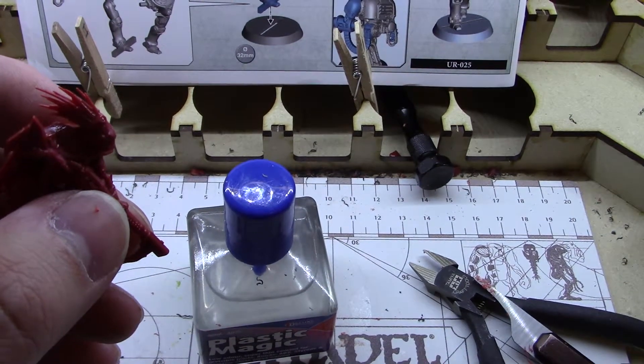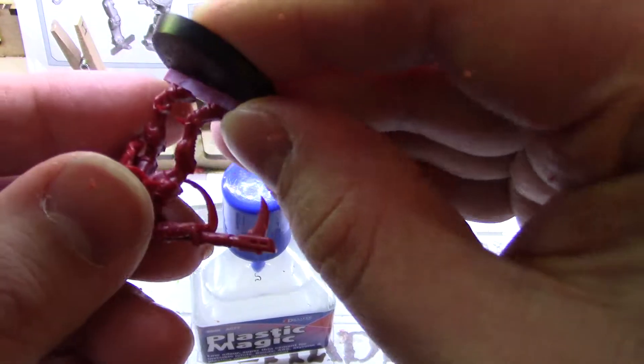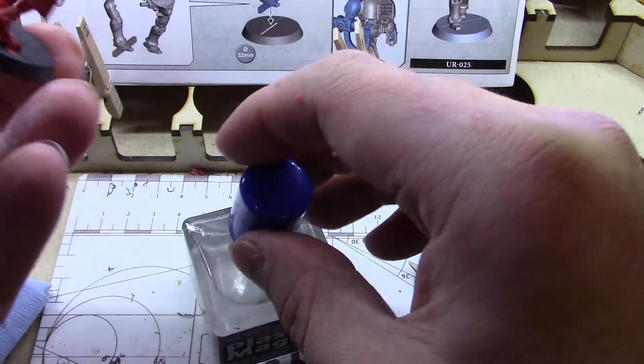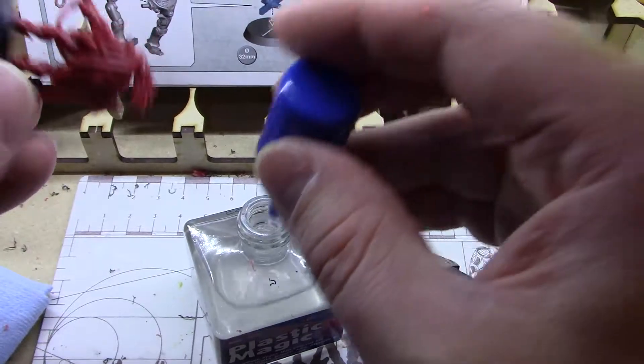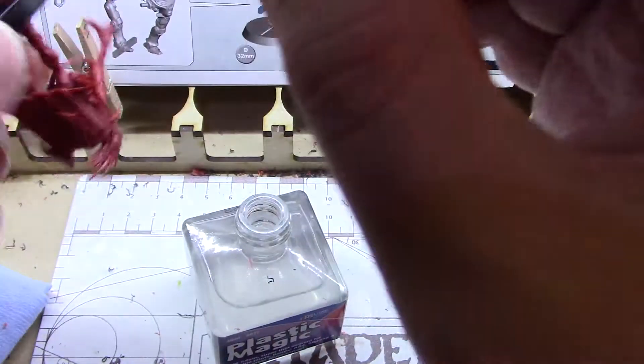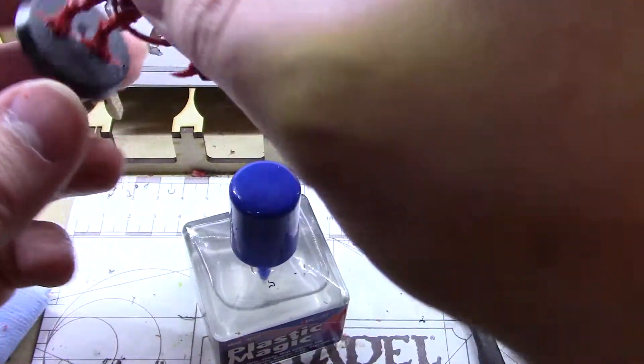That looks like all we have to do there. It has a slotted 32mm base. Maybe we will stick the Kroot Tracker into the base. There we go, just like that. We will add a little bit of our glue along the track. Remember, you watched the other videos I talked about, I'm going to be putting a basing material on these bases to cover up these slots because that really bugs me.